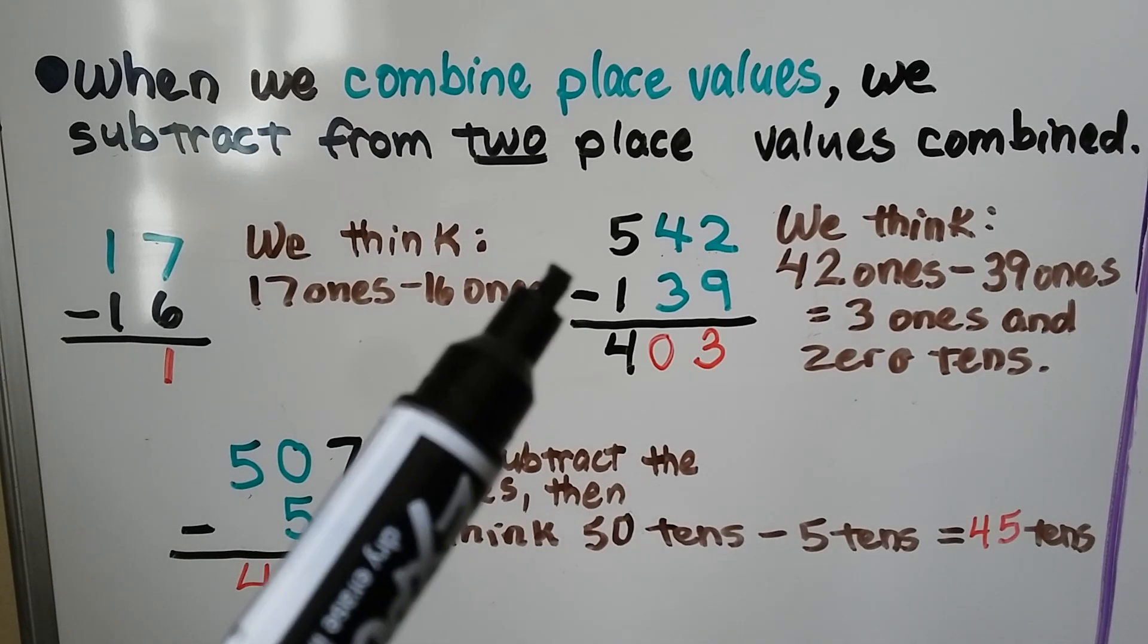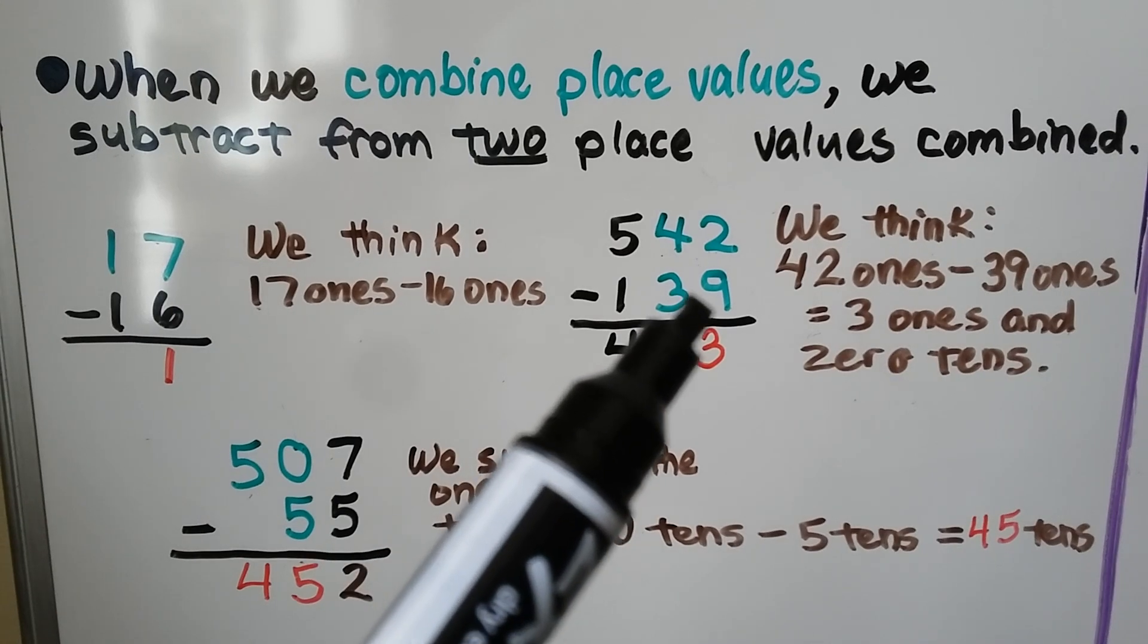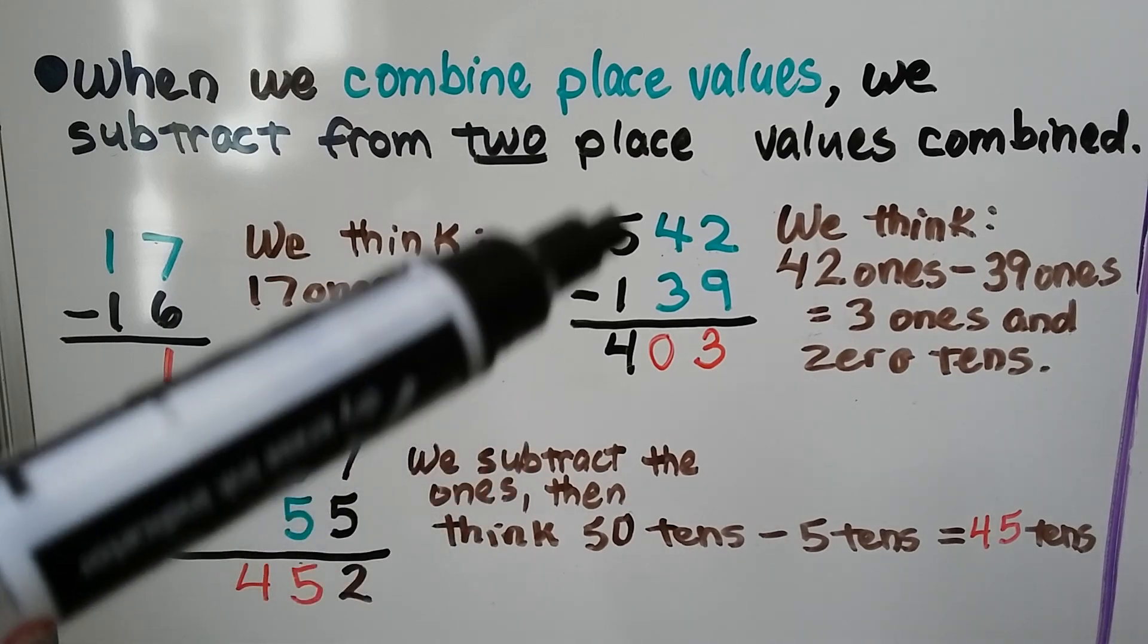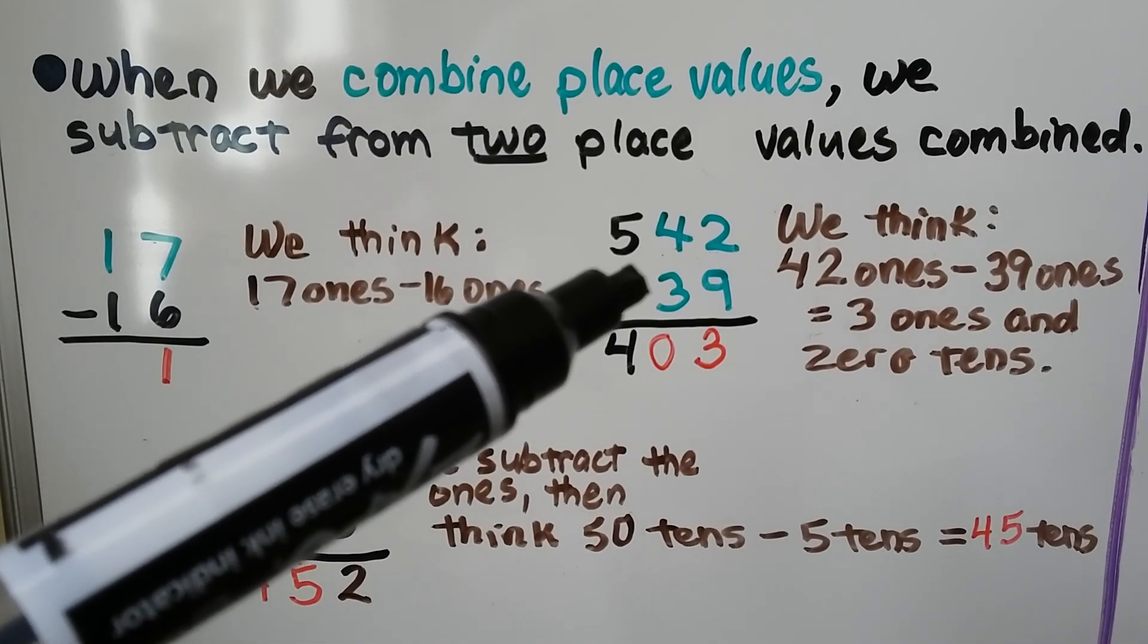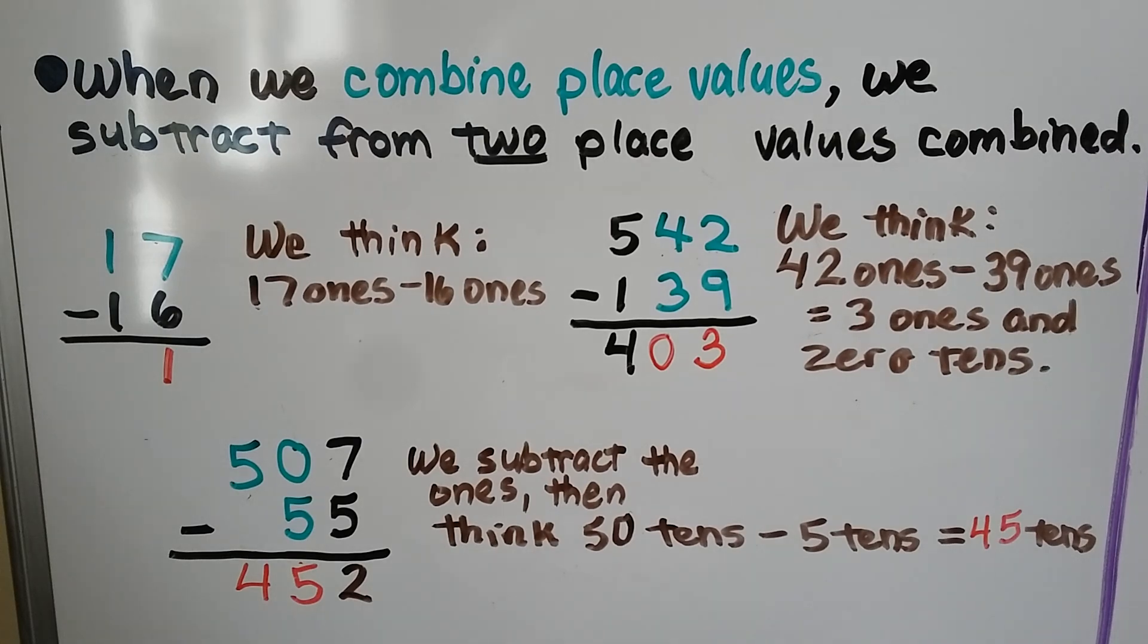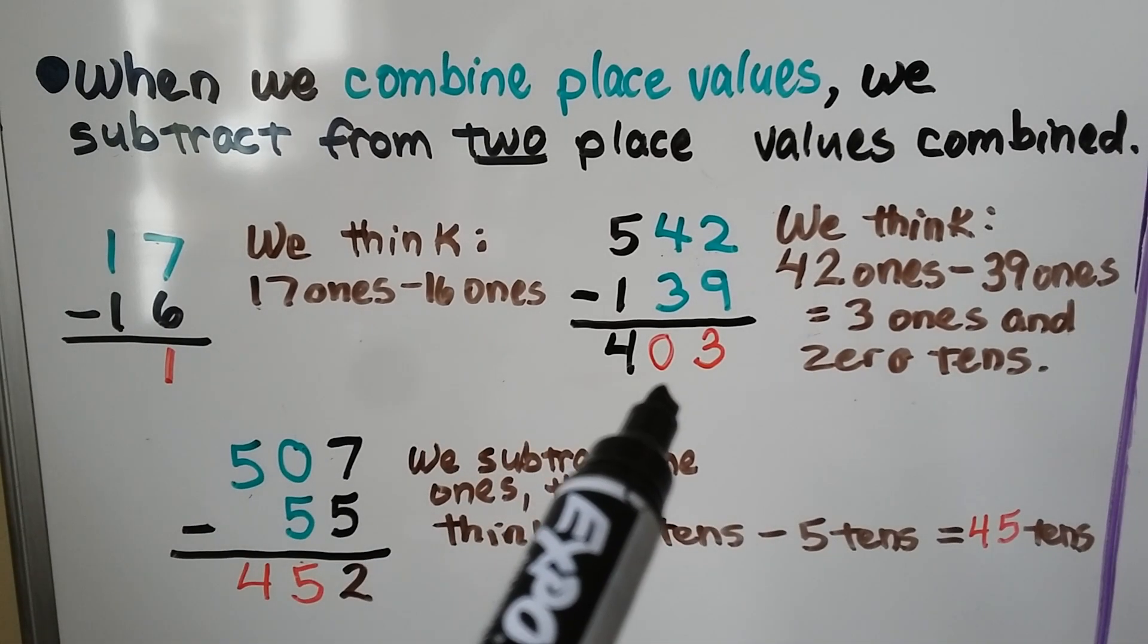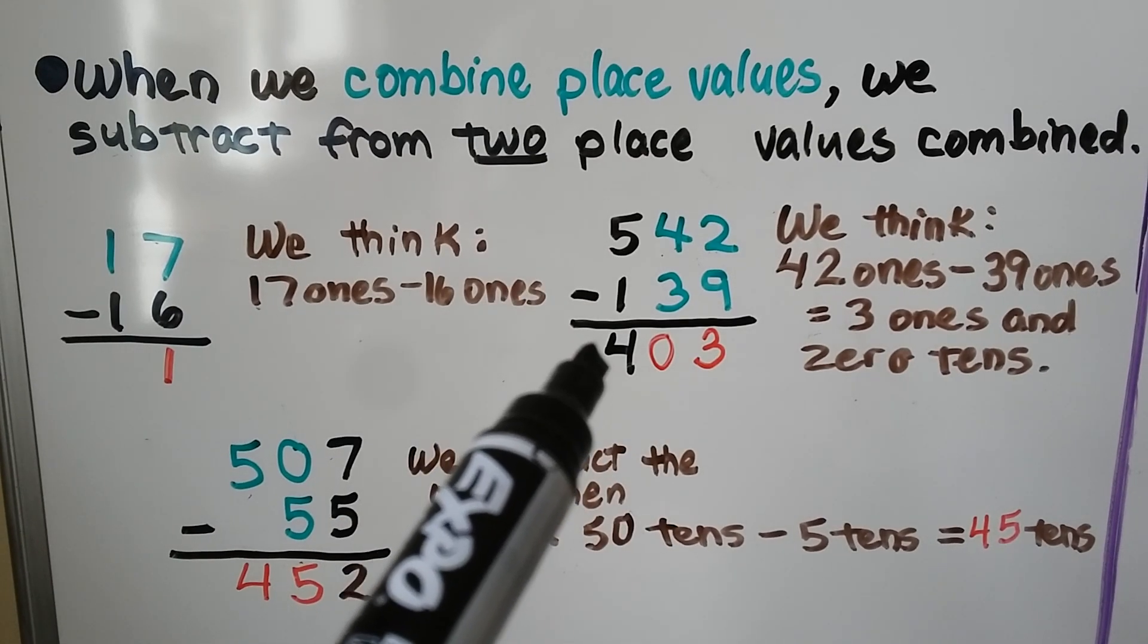When we have 542 minus 139, we see that the 2 is smaller, less than the 9. So we think 42 ones minus 39 ones. The difference between 42 and 39 is 3. It's 3 ones. We wouldn't have any tens, so we put a 0 there. Then we subtract the hundreds: 500 minus 100 is 400.